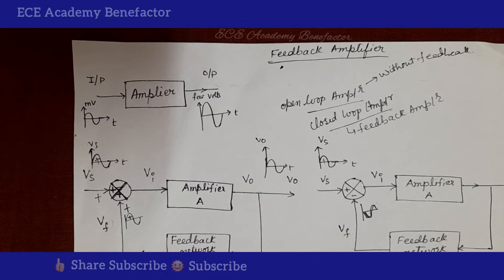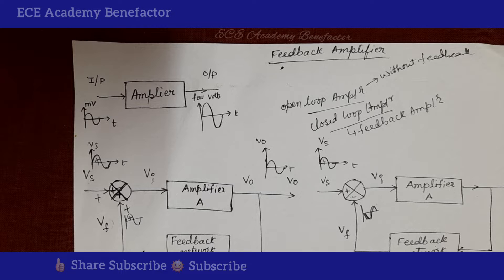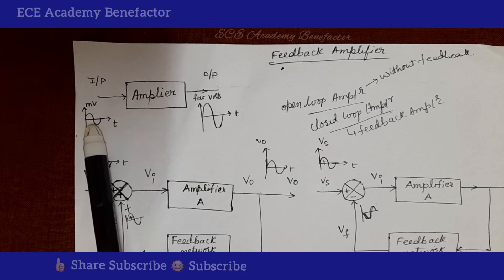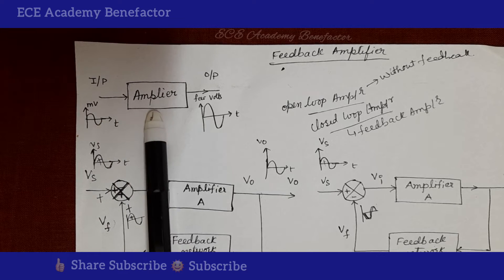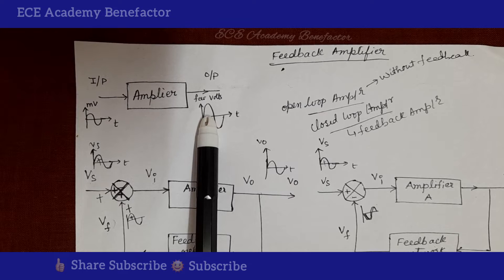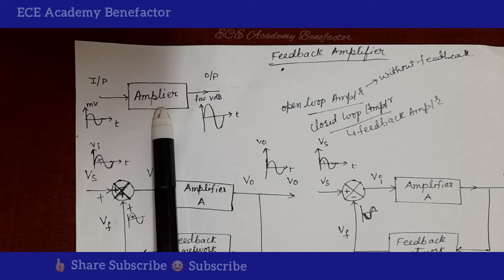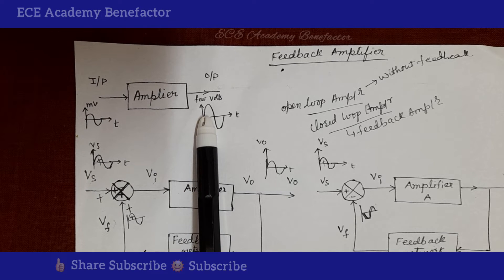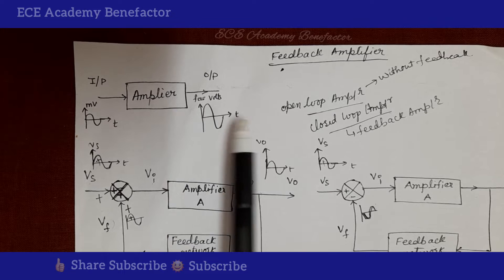In this class, we will be seeing the topic feedback amplifiers and its block diagram. An amplifier is an electronic device which increases a weak signal strength to a strong signal. If the input is in millivolts, the output of the amplifier will be in few volts, and the phase of this output will depend on the type of amplifier selected. An amplifier can be of two types: open loop amplifier and closed loop amplifier.